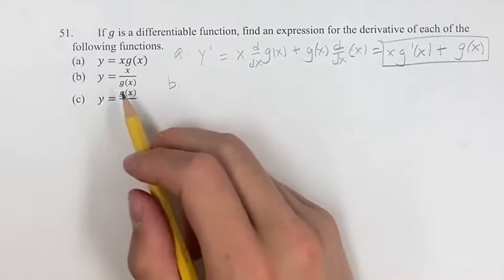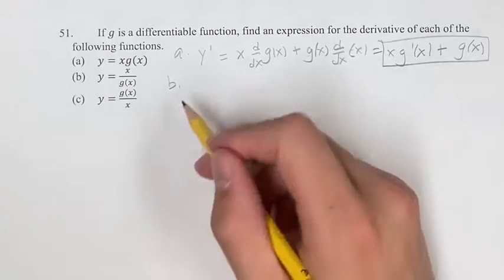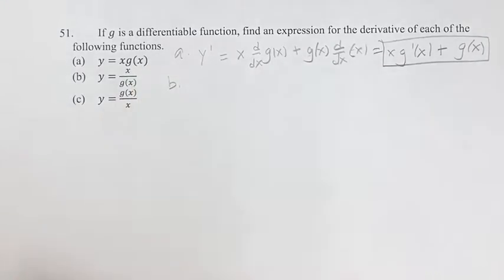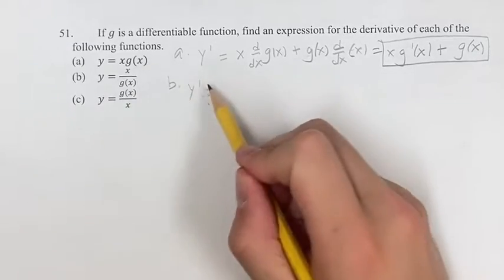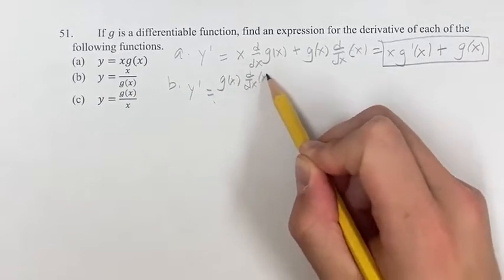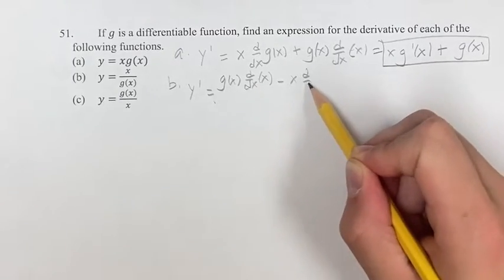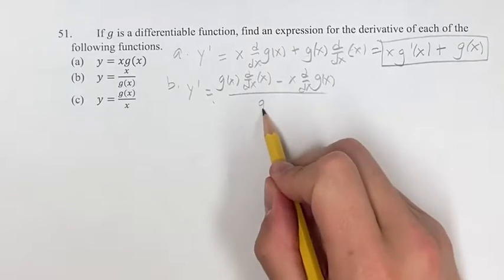For b, we have y is equal to x over g of x, so in this case we have a fraction, so we can use the quotient rule. So you have y prime is equal to the denominator times the derivative of the numerator minus the numerator times the derivative of the denominator over the denominator squared.